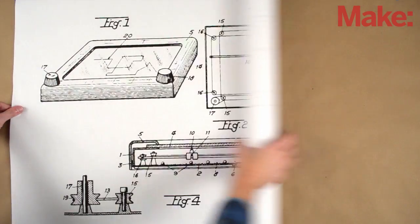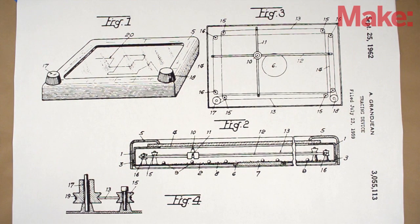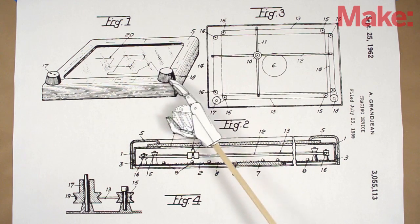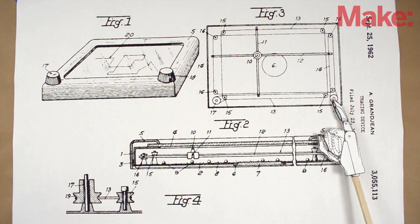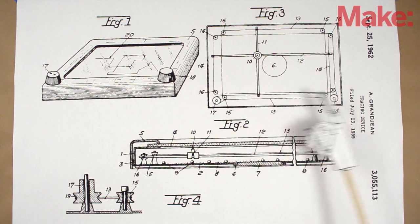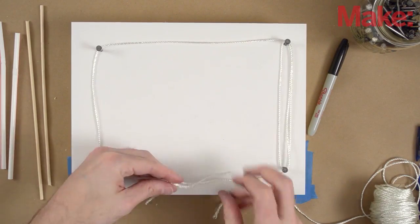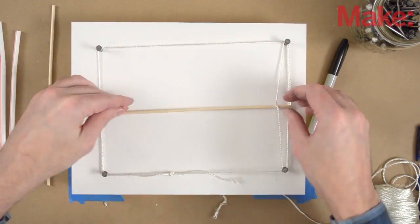Here is the original patent drawing for the tracing device, which looks nearly identical to today's iconic red box. Turning a knob moves a cable through a series of pulleys so that two parallel cables move in the same direction. When you attach a crossbar to these cables, it will move back and forth in one dimension.